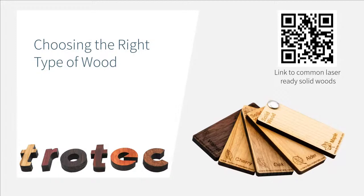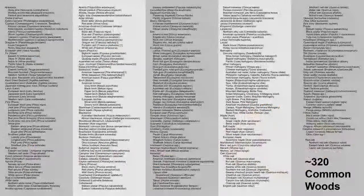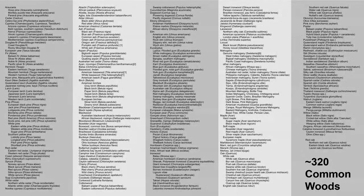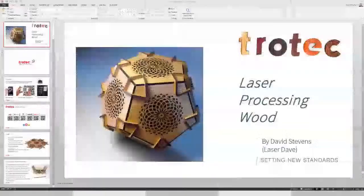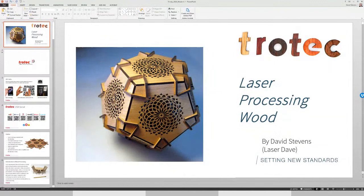Beyond the machines themselves, understanding wood and how to choose the right type is key. There's a huge variety of wood species — I looked up types of wood on Wikipedia and even I was surprised by the list. How do you know what will work best with the laser system? How do you know which is the best for processing with your laser?